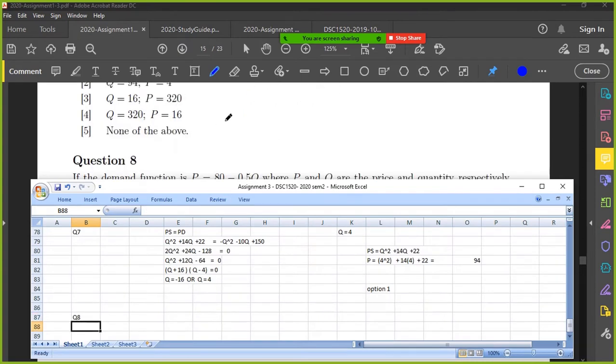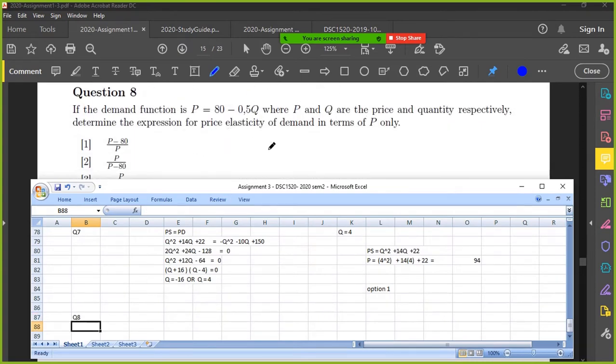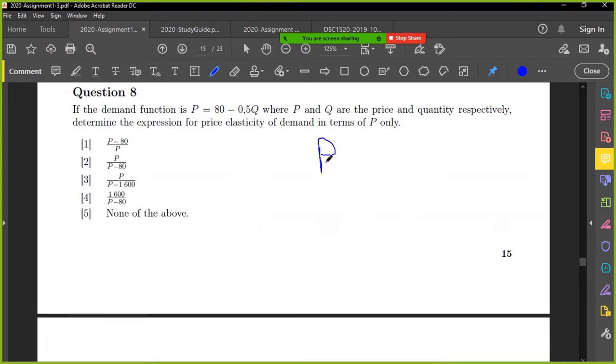Okay, 8. All right. This is looking at demand function is that, where P and Q is that. Determine the expression for price elasticity of demand, where P is only that. Okay, so this is just a formula. The formula is this. P over P minus, I think they write A here. Okay, the A is the constant, so it's the 80. Right, so the answer is option 2.